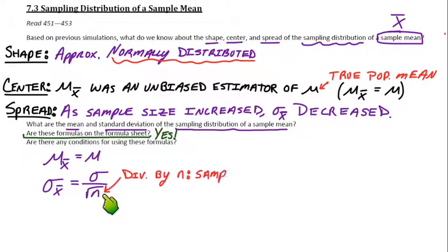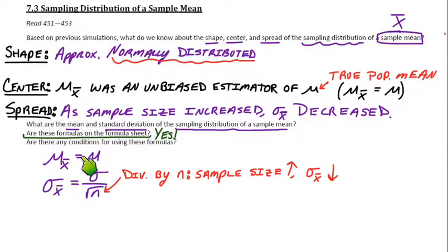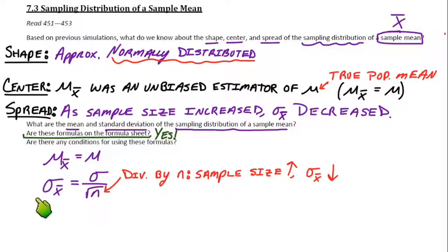That formula proves that when our sample size goes up, we're dividing by a bigger number, so the standard deviation of x-bar goes down. To be clear, that's not the standard deviation of the sample — that's the standard deviation of the sampling distribution of the sample mean.